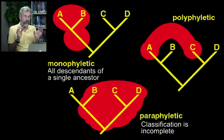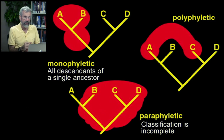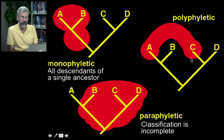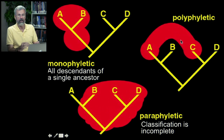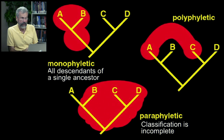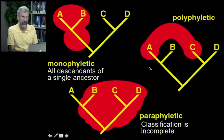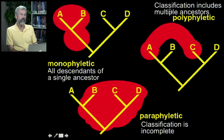The worst problem is a wrong classification where we have two separate lineages that have been grouped together under some term — say 'mugwumps' — and yet the two species we've put in that unit actually had separate evolutionary histories. These classifications include multiple ancestors.